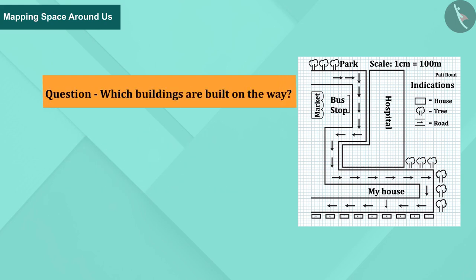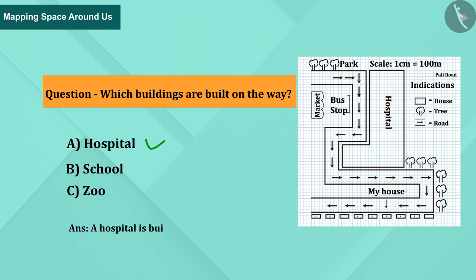Question: Which buildings are built on the way? A) hospital, B) school, or C) zoo. A hospital is built on the way.